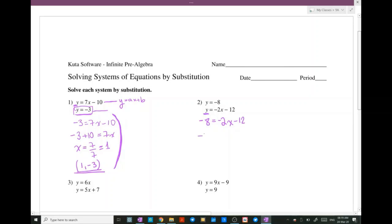x is on one side, numbers on the other. While you're moving the numbers, you have to change their sign. Therefore, minus 8 plus 12. x is equal to minus 2 plus 4 over minus 2. So this is minus 2. So the solution for this system is minus 2 for x and minus 8.